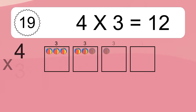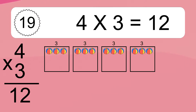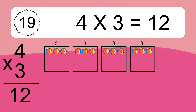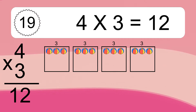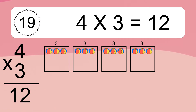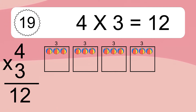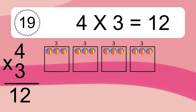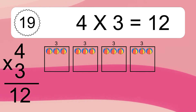4 times 3 equals what? 4 times 3 equals 12. We have 4 boxes and each box has 3 colorful balls inside. If you count all the balls in all the boxes together, you will have 4 times 3 balls. This equals 12 balls.